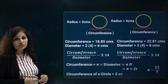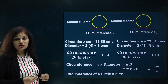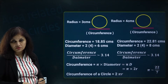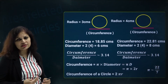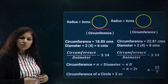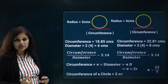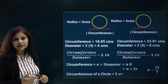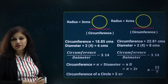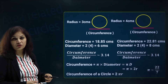We must wisely use the value of pi when solving questions. If the radius or diameter is a multiple of 7, then use the fraction 22/7 for smoother and easier calculation; otherwise use 3.14. You can use 3.14 anywhere, but if you want easier calculations, look at whether the radius or diameter is a multiple of 7, and if so, it is always better to use 22/7.